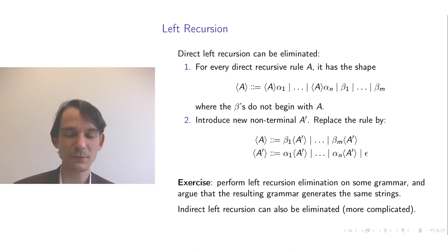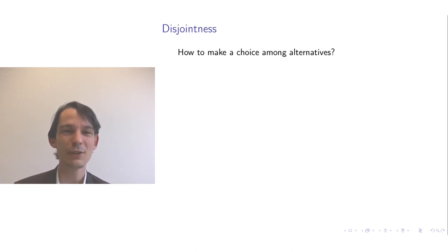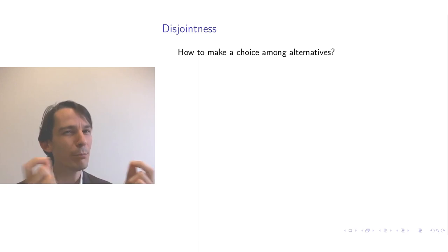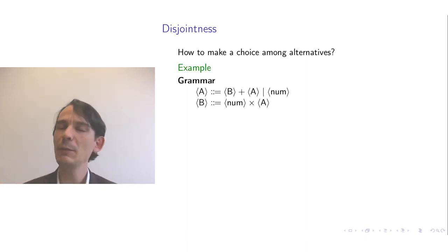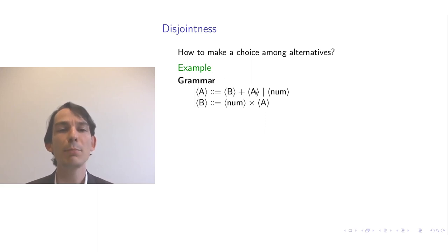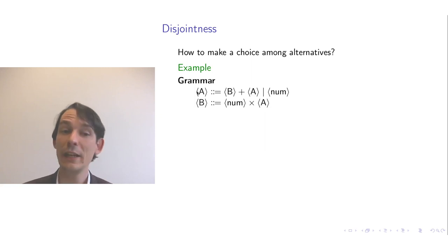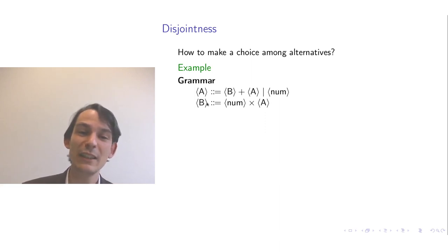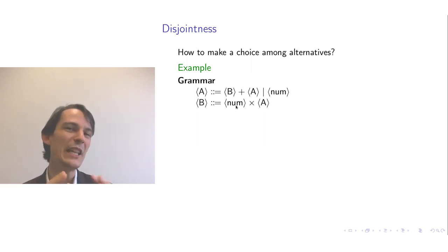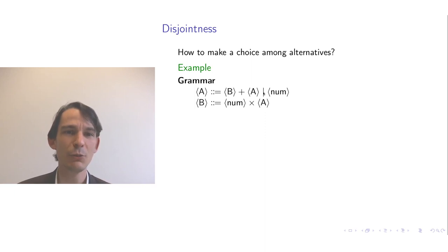Another important property of LL grammars is that the parsing must be input-directed — we use the input to make choices among alternatives in rules. But how can we make these choices? Consider a grammar where non-terminal A can either be B plus A or a number, and B is num times A. Whenever we peek into the input and see a number, how can we make the choice between these two alternatives? That's difficult because the first sets overlap.